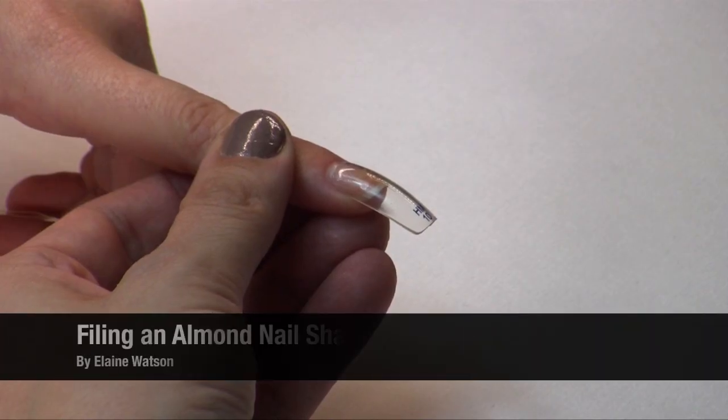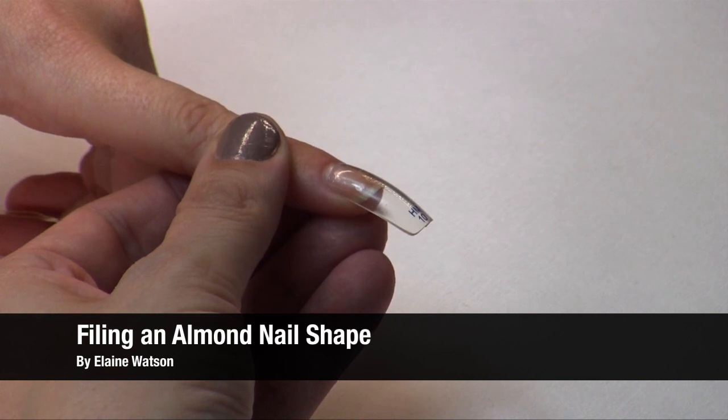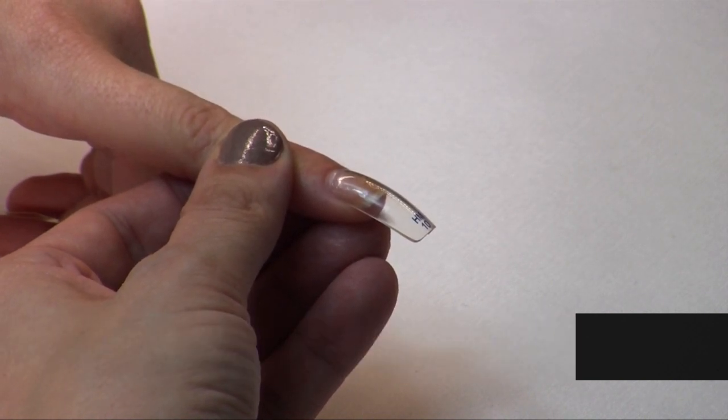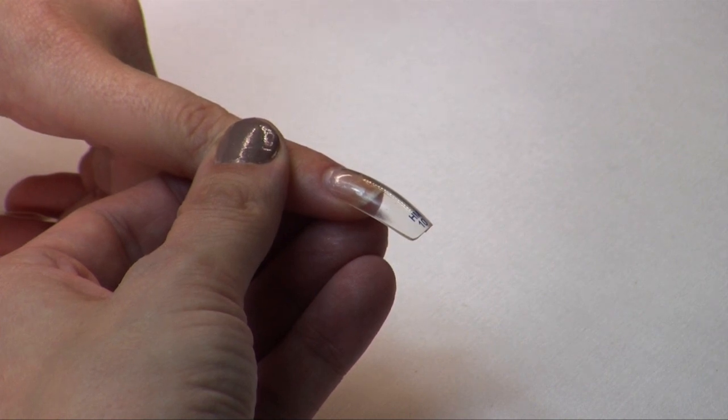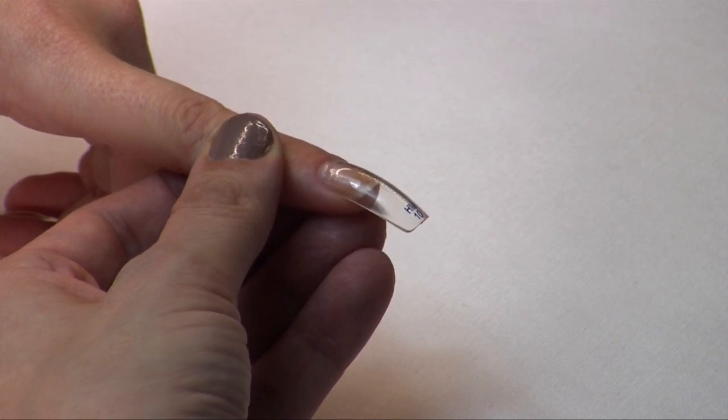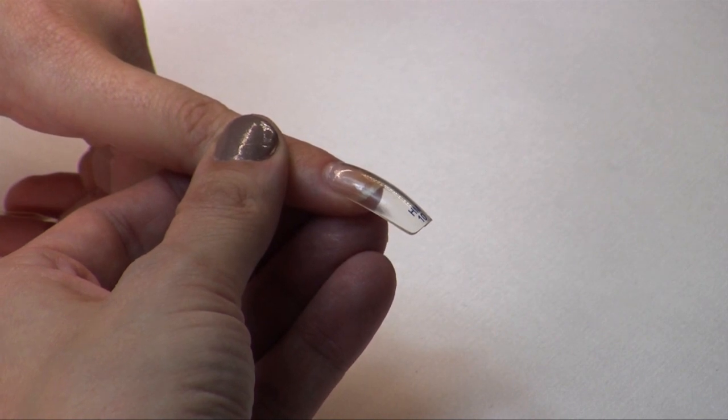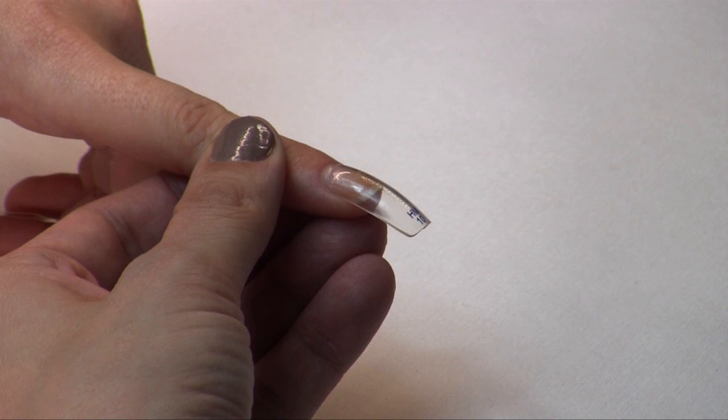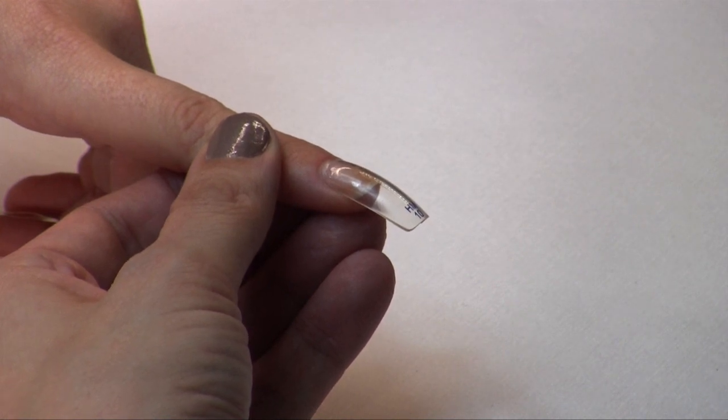This is part one of a three-part series of the most popular nail shapes that I'm going to demonstrate for you today. On this first one, I'm going to do a really popular almond sort of oval pointy shape that's the safe in-between between being a rounded nail and a long stiletto nail.